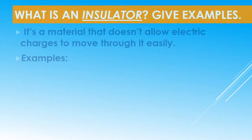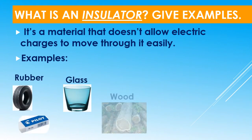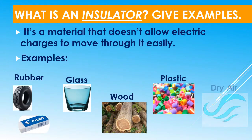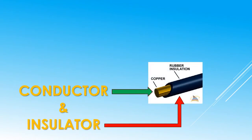What is an insulator? It's a material that doesn't allow electric charges to move through it easily. Examples: rubber, glass, wood, plastic, dry air. Wires used to carry electric current are made of metals that are good conductors, such as copper, and an insulator such as rubber or plastic, to keep current from passing where it's not supposed to go.